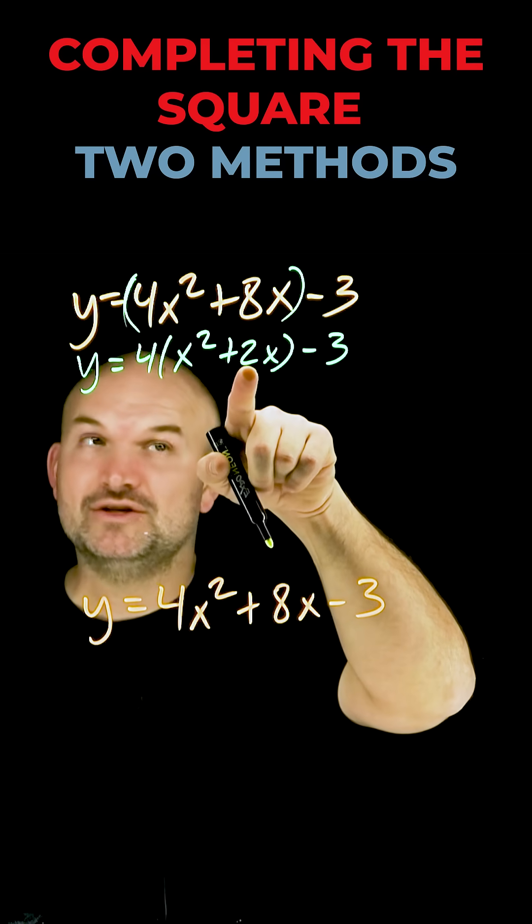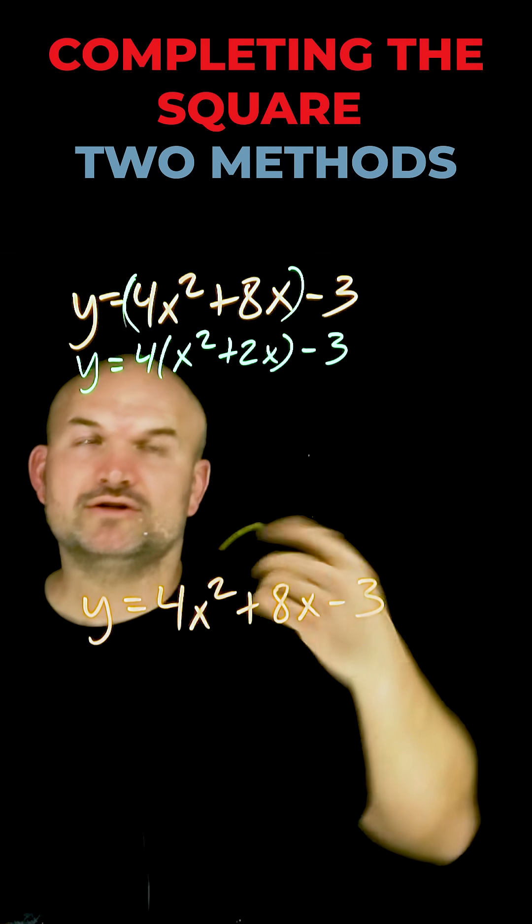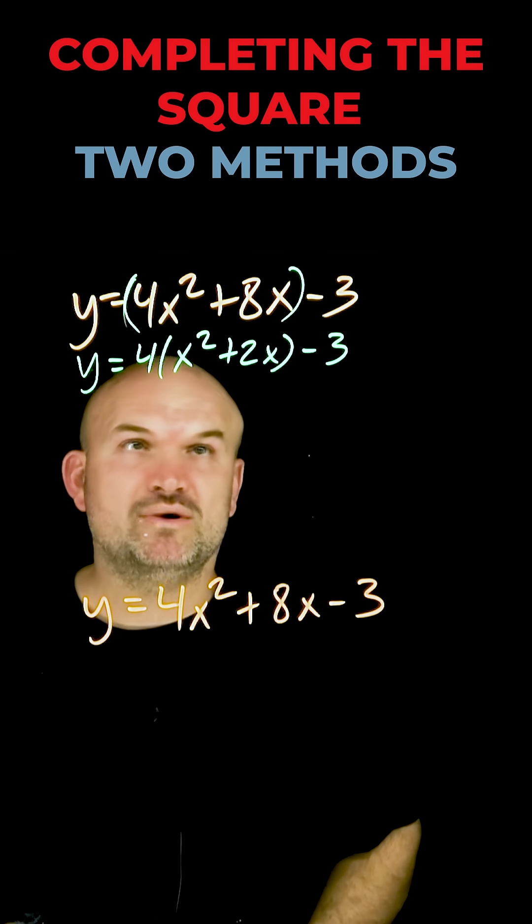So again, to find this value c, you're gonna take b divided by 2 and then square it. 2 divided by 2 is going to be 1. 1 squared is 1.